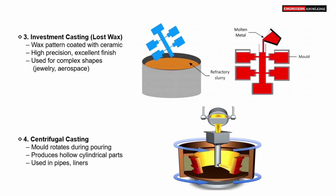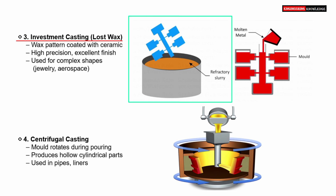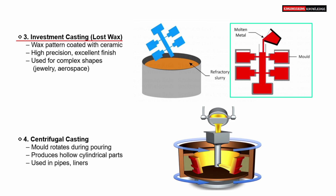Let us now look at two specialized casting processes: investment casting and centrifugal casting. Investment casting, also known as lost wax casting, starts with creating a wax pattern that is an exact replica of the desired part. The wax pattern is then coated with a ceramic material to form a hard mold called the refractory shell. The wax patterns are dipped into a ceramic slurry. Once the ceramic hardens, the wax is melted and drained out, leaving behind a hollow mold. Molten metal is poured into this ceramic mold. After the metal solidifies, the ceramic shell is broken away to reveal the final high-precision metal casting. This method is known for excellent surface finish and high dimensional accuracy, making it ideal for producing complex parts such as those used in jewelry and aerospace components.